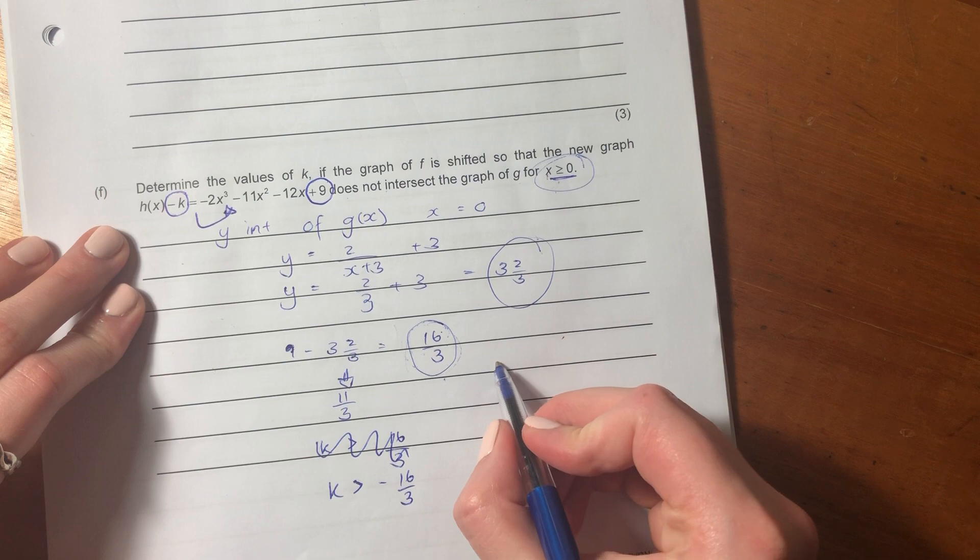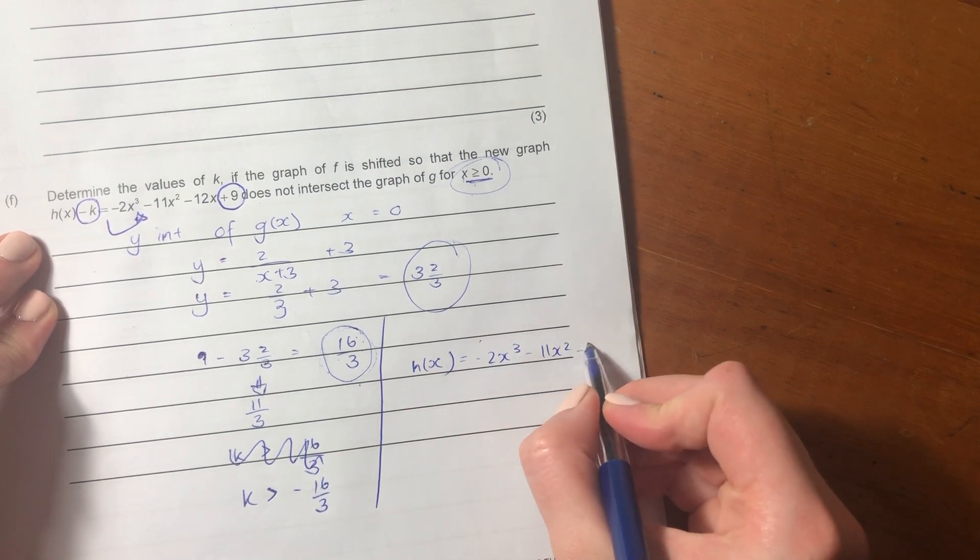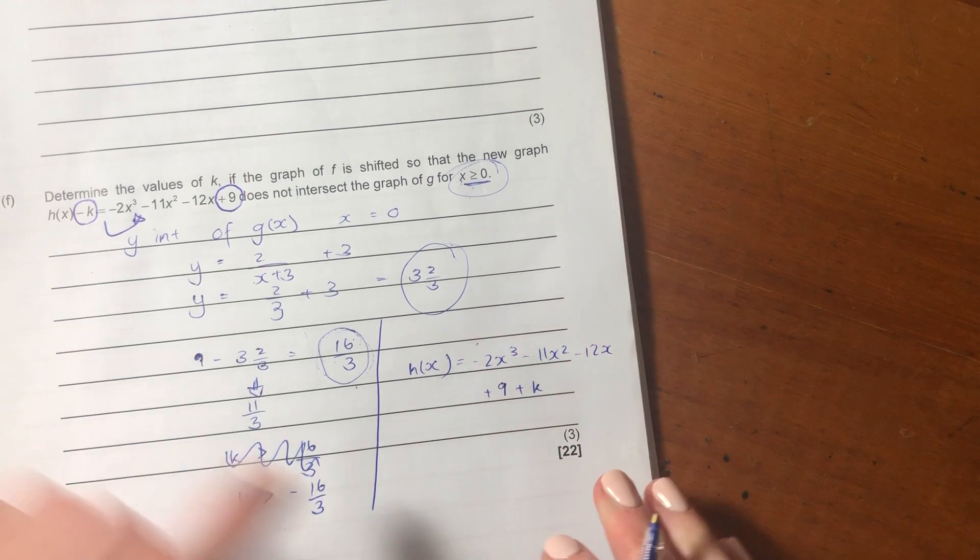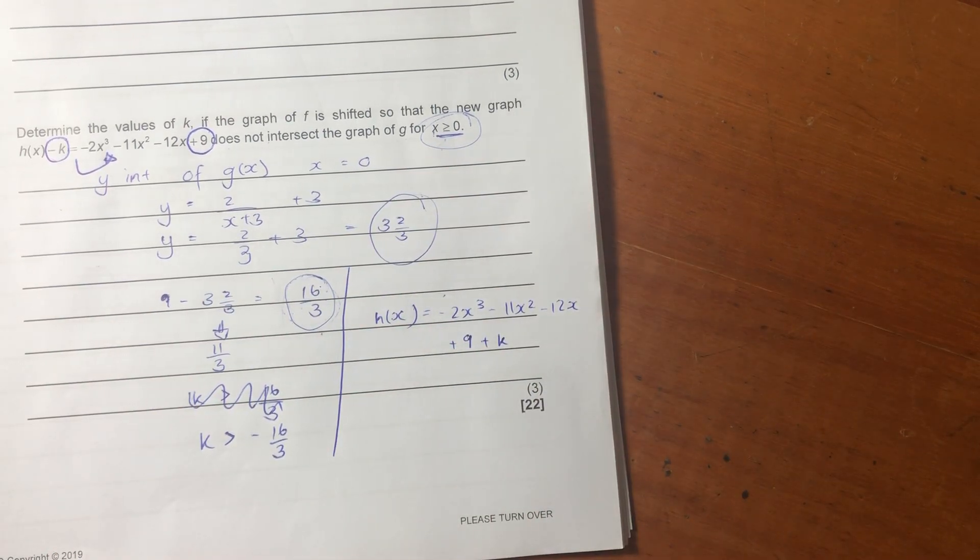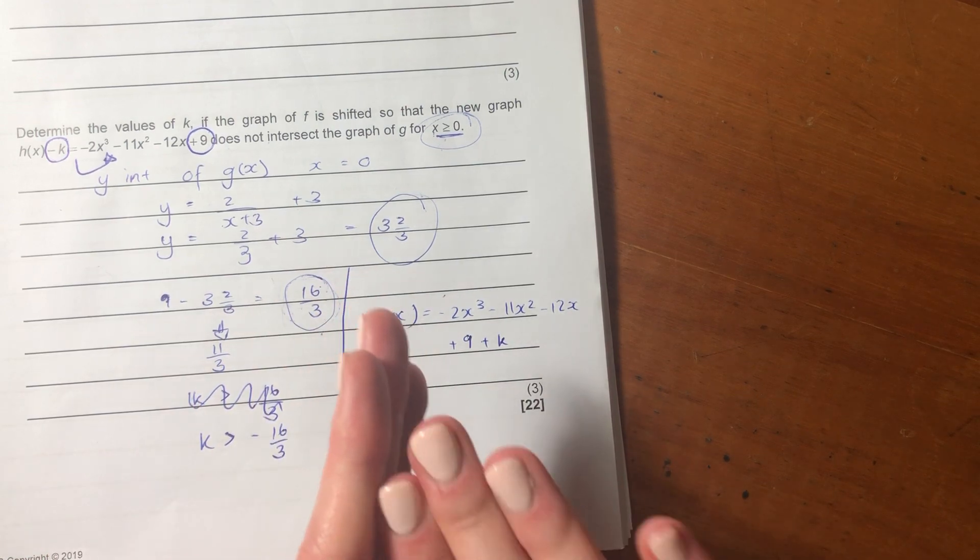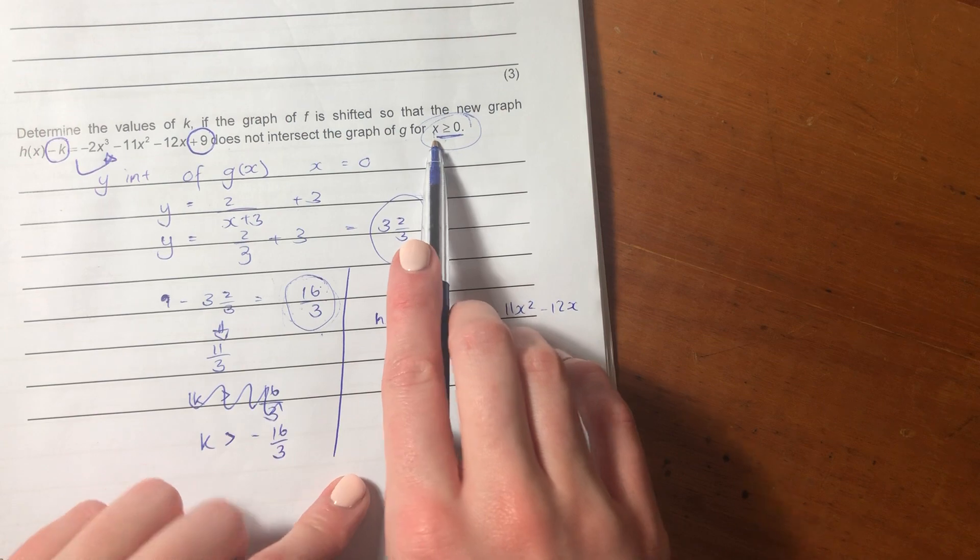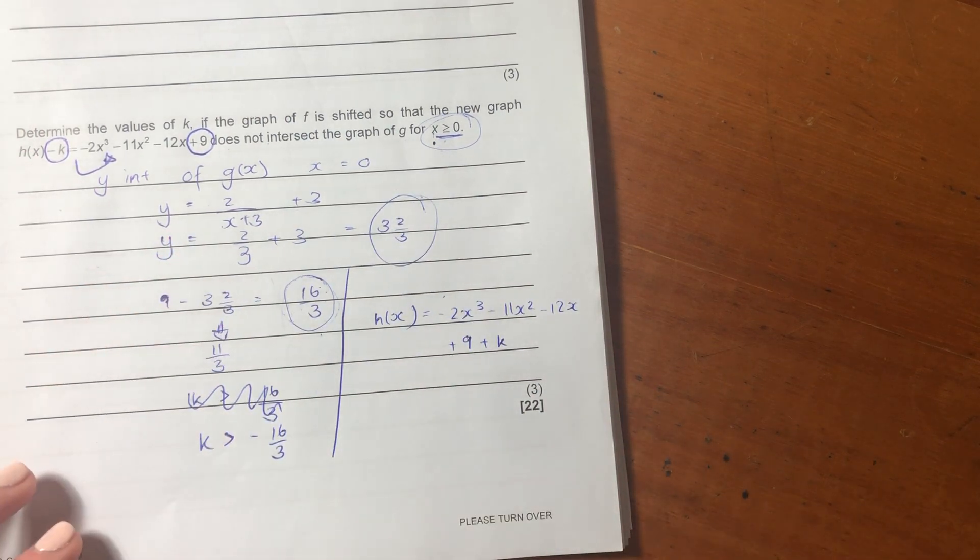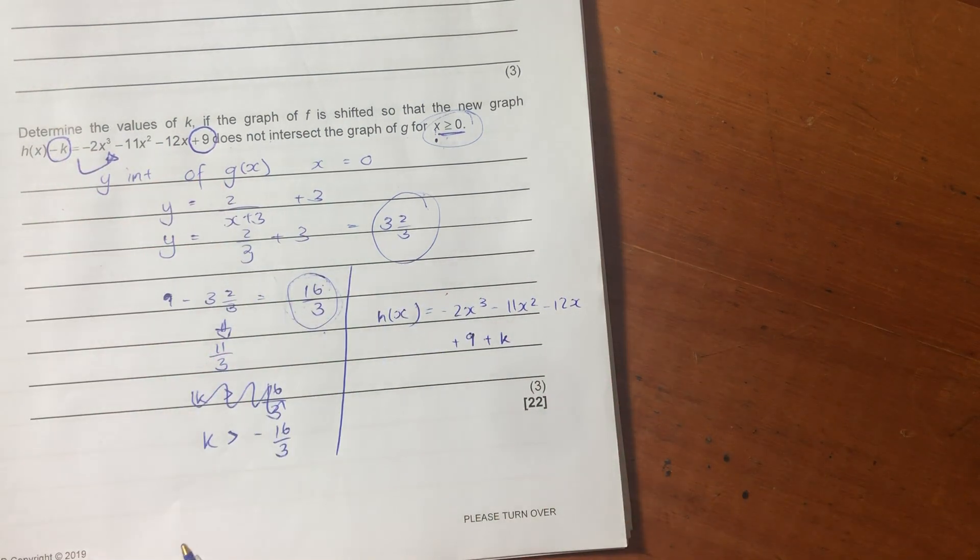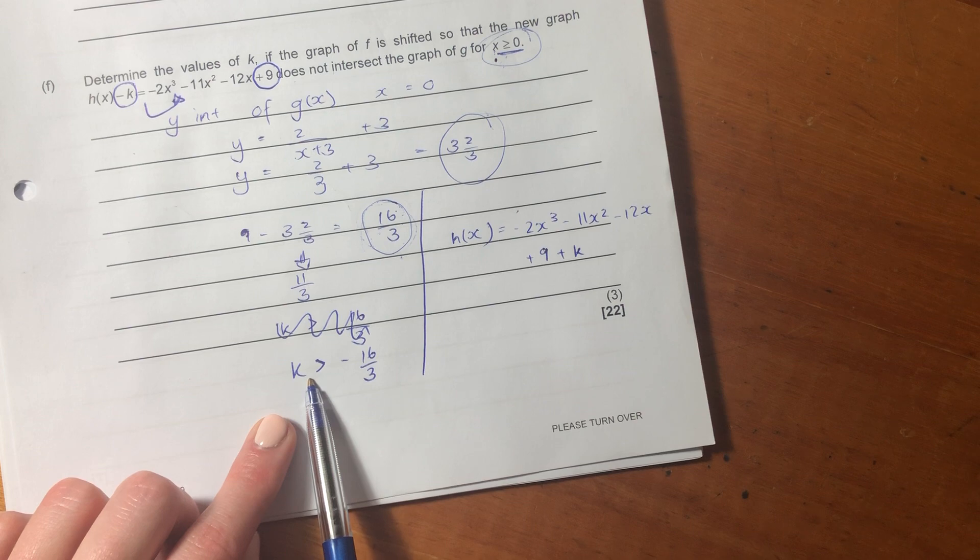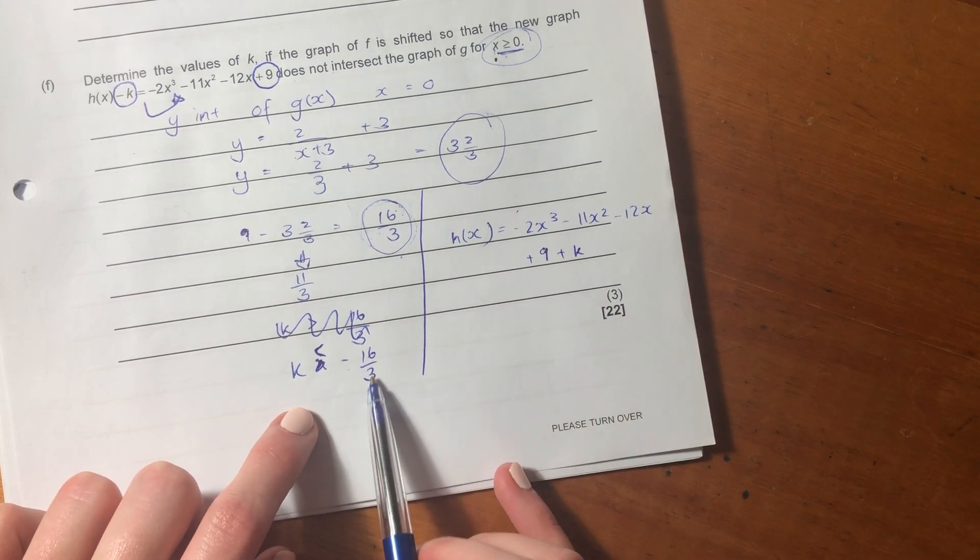But remember, it says that it can't ever equal it. So it actually has to be below it. So we know that the shift, the subtraction that we take away from 9, the shift down that we take from 9 has to be greater than 16 over 3. So what's interesting here is they've written K on this side of the equation, but we actually want to make a change to 9, which is the intercept. So H of X is going to be negative 2X cubed minus 11X squared minus 12X plus 9 plus K. So we know here that K has to be the negative version of 16 over 3 in order to make that 9 smaller. So we know that it can be 16 over 3, and it can be anything bigger than 16 over 3. Well, actually, it can't be 16 over 3 exactly, because at 16 over 3, it actually intersects G of X at X equals 0. So it has to be 16 over 3 or more in order to keep that 9 below that intercept of the hyperbola.